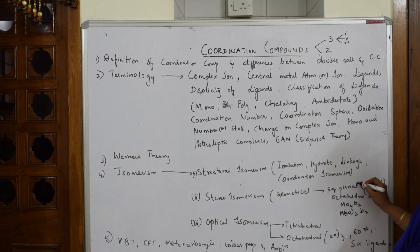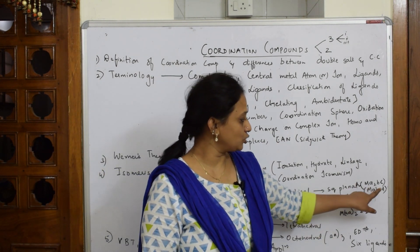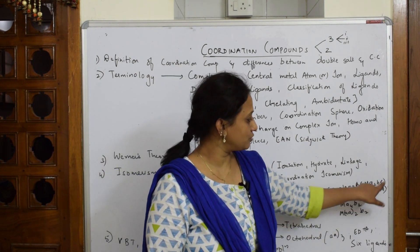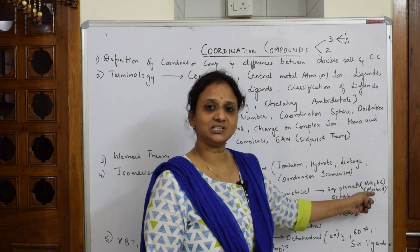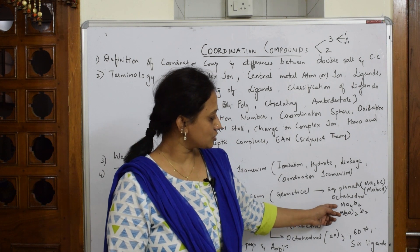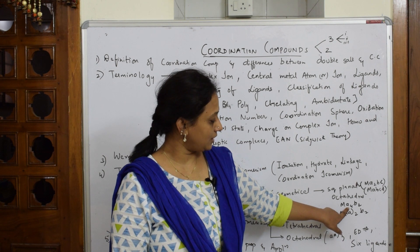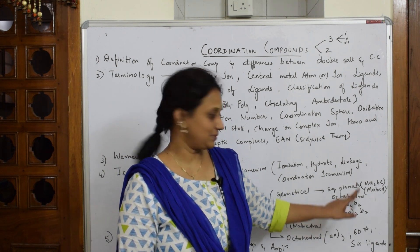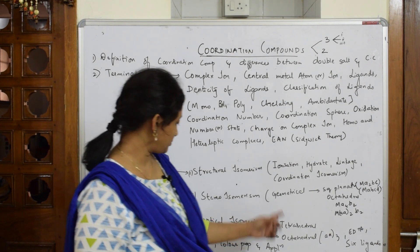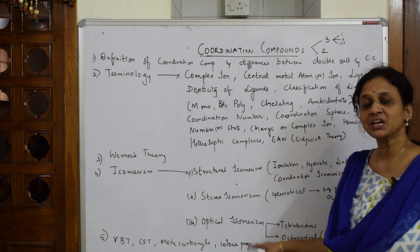In structural isomerism, I'll be teaching ionization, hydrate, linkage, and coordination isomerism. For stereo isomerism, I'll cover square planar and octahedral complexes. In square planar, there are four ligands, and I'll teach types like MA₂BC and MABCD. In octahedral, there are six ligands, and I'll cover types A₄B₂ and A₂B₂.